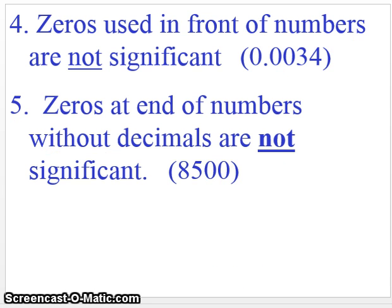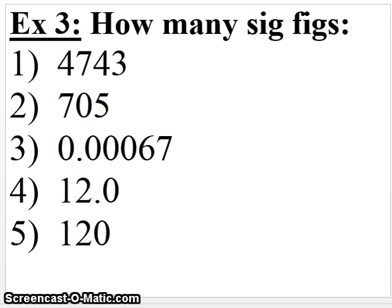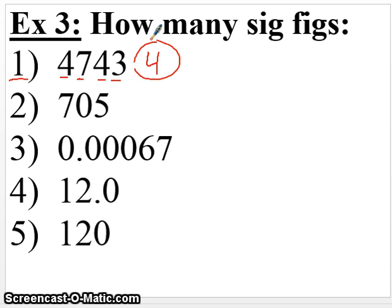Why not we try a few example problems? We're just asking how many significant figures in each of these. Example one: all four of these numbers are non-zero numbers, so they are all significant — we have four significant figures. Example two: we have a zero in the middle, so this zero is significant. We have three significant figures here.